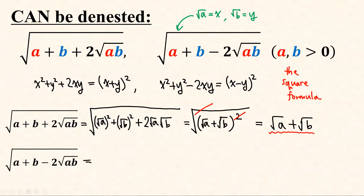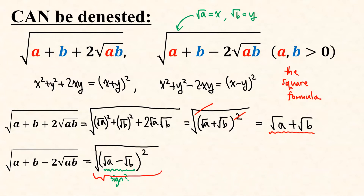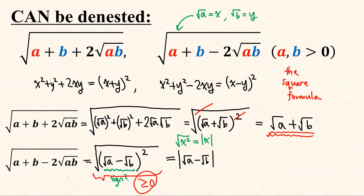The same principle applies to the one with the negative sign. But in this case, we must be careful with the sign of (square root of a minus square root of b) when removing the square exponent and the square root, because this entire term must always be non-negative. The general basic property is: the square root of x squared equals the absolute value of x, which is always non-negative. So here we have to write the absolute value of (square root of a minus square root of b).